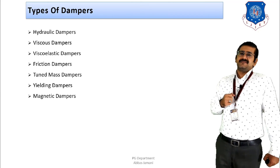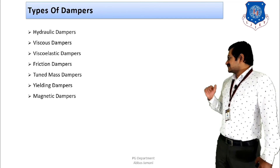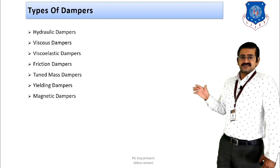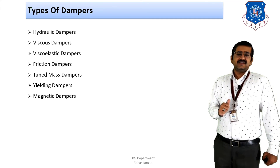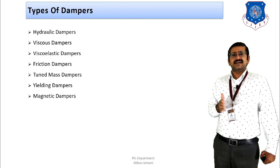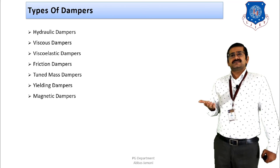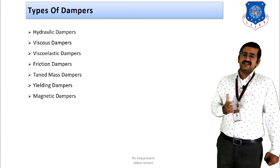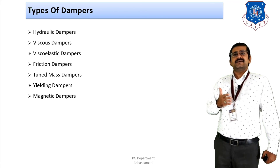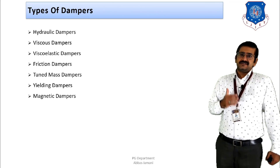There are seven types of dampers to be discussed: first is the hydraulic damper, second is the viscous damper, third is the viscoelastic damper, fourth is the friction damper, fifth is the tuned mass damper, sixth is the yielding damper, and seventh is the magnetic damper. All seven types have different materials and characteristics in the way they dissipate energy. The details of these dampers will be covered in the next lecture. Today's lecture has provided a clear idea about the definition, function, and behavior of buildings where dampers are installed.